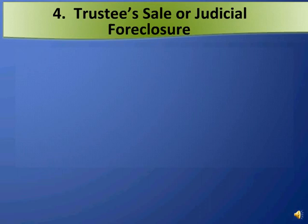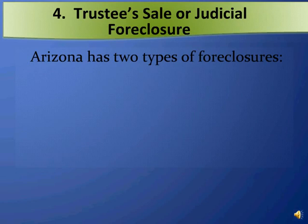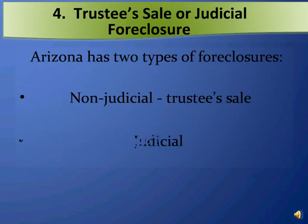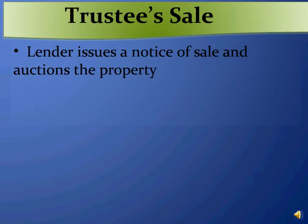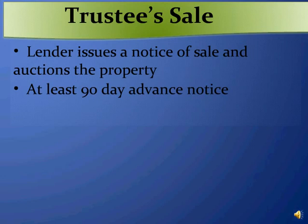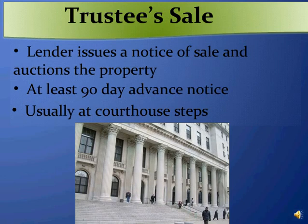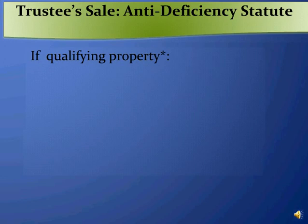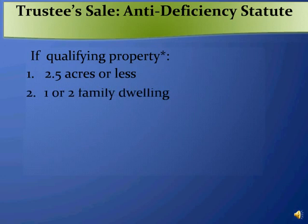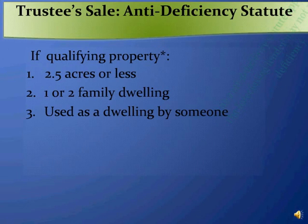The fourth question is what type of foreclosure is at issue — a trustee sale or judicial foreclosure? Arizona has two types of foreclosures: a non-judicial foreclosure or trustee sale, and a judicial foreclosure. A trustee sale is the process by which the lender forecloses without court intervention. The lender simply issues a notice of sale and auctions the property, giving at least 90 days advance notice. Typically, trustee sales occur at the courthouse steps. If the property is qualifying property — 2.5 acres or less, a one or two family dwelling actually used as a dwelling — then the anti-deficiency statutes apply and the foreclosing lender may not pursue a deficiency.